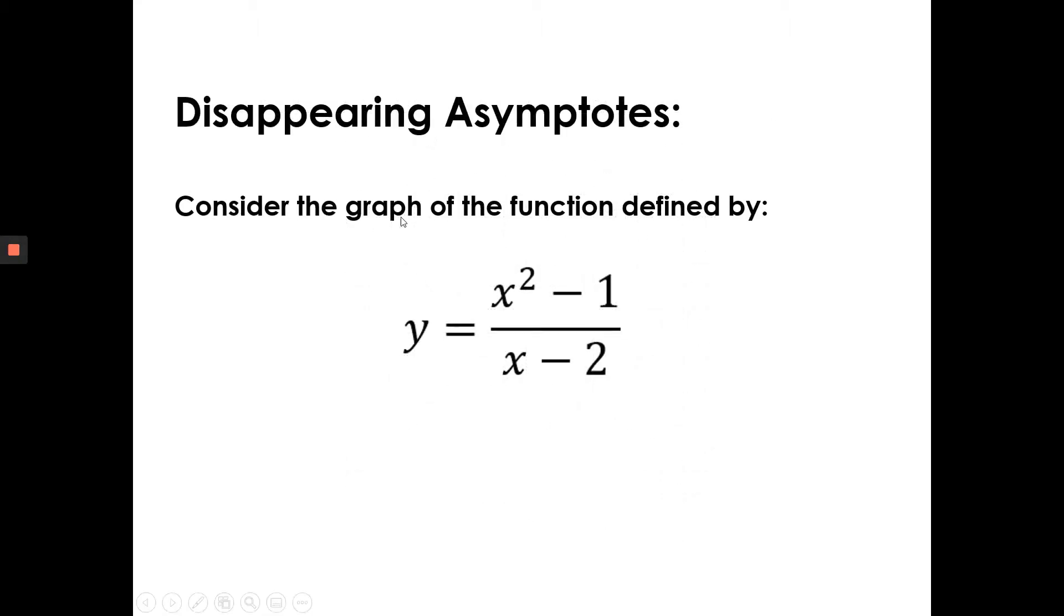So let's take a look at this rational function we have here, y equals x squared minus 1 all over x minus 2. This one actually does not have a horizontal asymptote. I know that because the degree of the numerator is 2 and the degree of the denominator is 1. In fact, this one has an oblique asymptote.